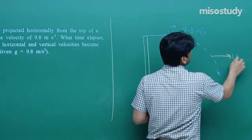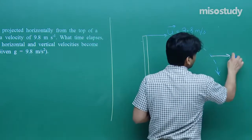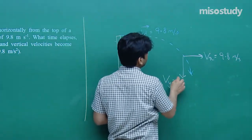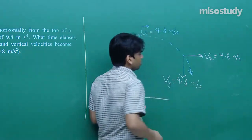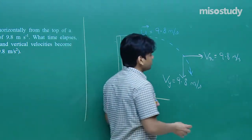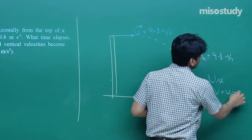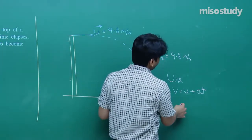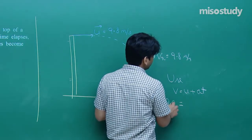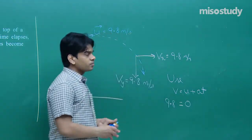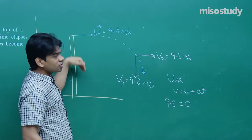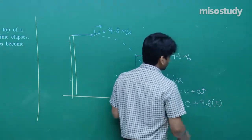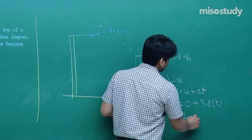There is no acceleration along the horizontal, so v_x = 9.8 m/s at all times. The vertical velocity must equal 9.8 m/s. Using v = u + at for vertical motion (taking downward positive): 9.8 = 0 + 9.8·t. Solving gives t = 1 second.